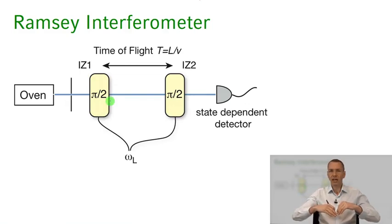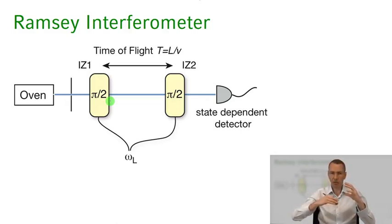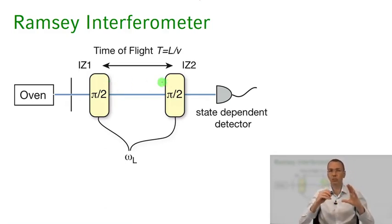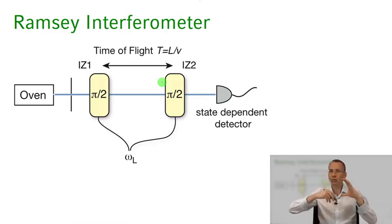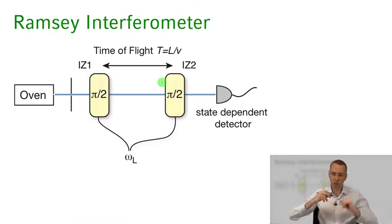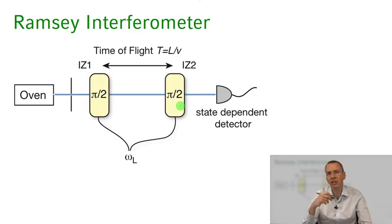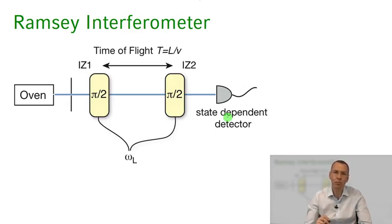The atom starts in the ground state. After the pi/2 pulse, it's in a coherent superposition of states 1 and 2 and has an oscillating dipole. After passing this first interaction zone, the atom is in free flight — just in the superposition state, oscillating at its natural resonance frequency omega_21, with its electron clouds oscillating back and forth. Then comes interaction zone 2, where we again apply a pi/2 pulse. Depending on the phase of the oscillating dipole relative to the phase of the field, the atoms will be more in the excited state or in the ground state, which we measure in the state-dependent detector.